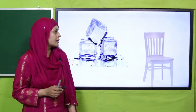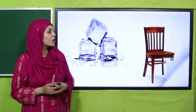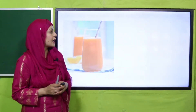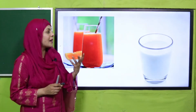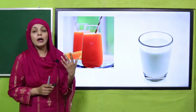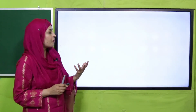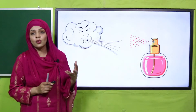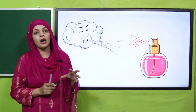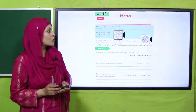For example, ice is solid and a chair is also solid. Besides these, there are liquids: juices, milk, and water — these are liquid states of matter. And then air, perfumes, and aerosols — these all are gases.